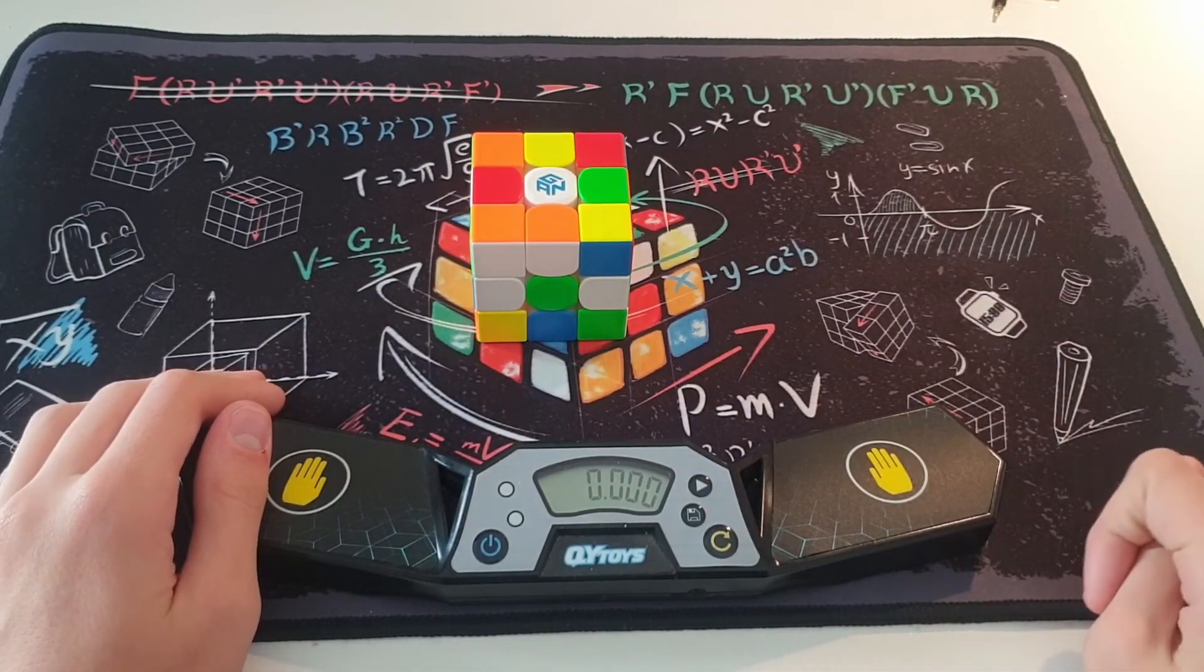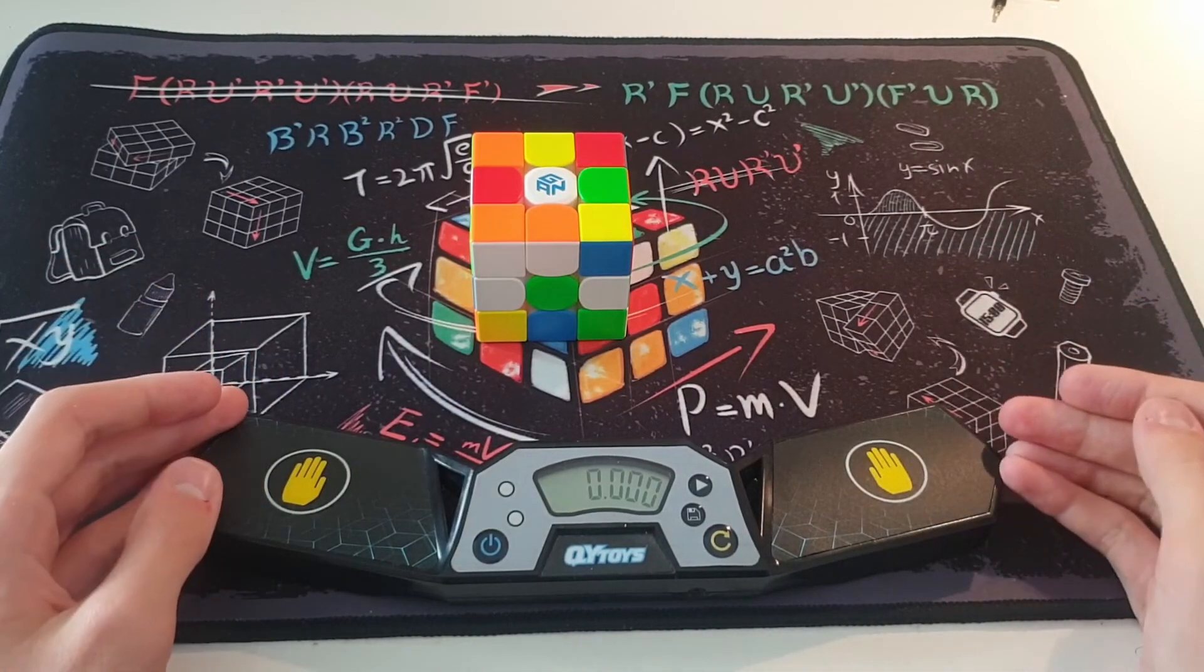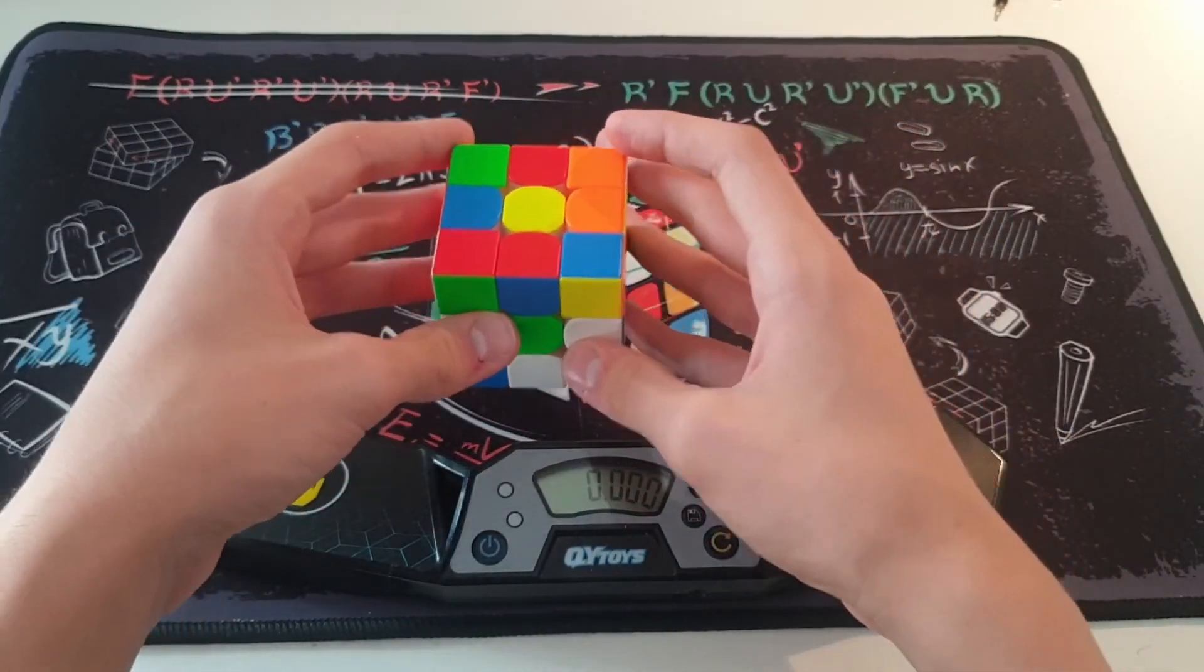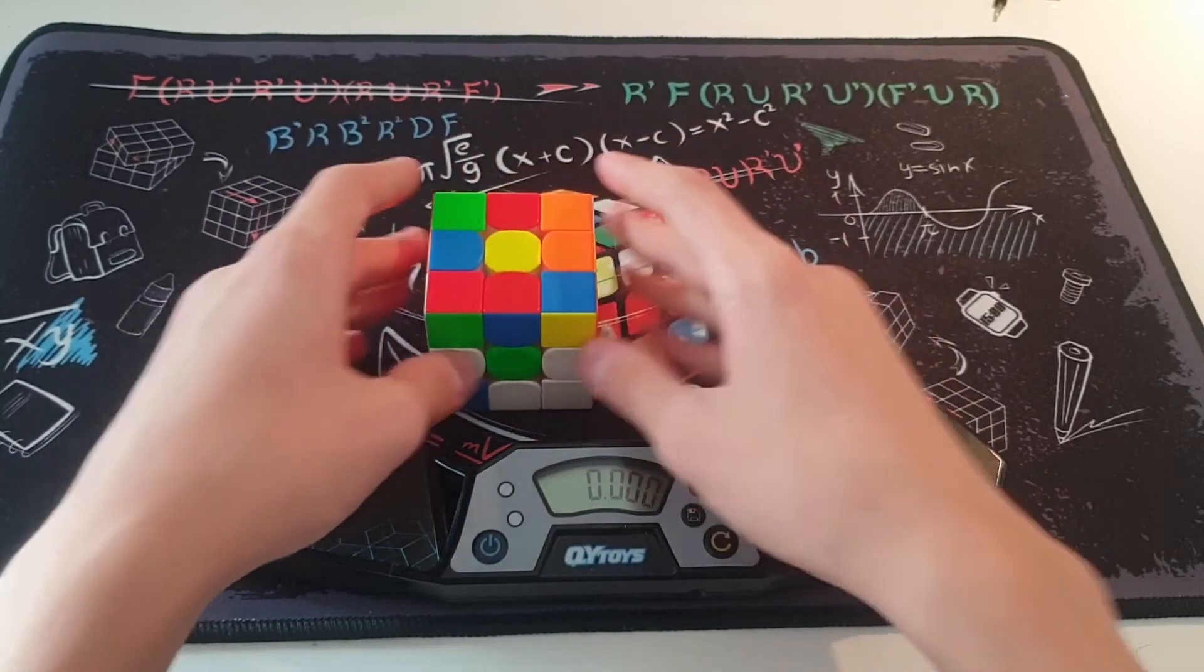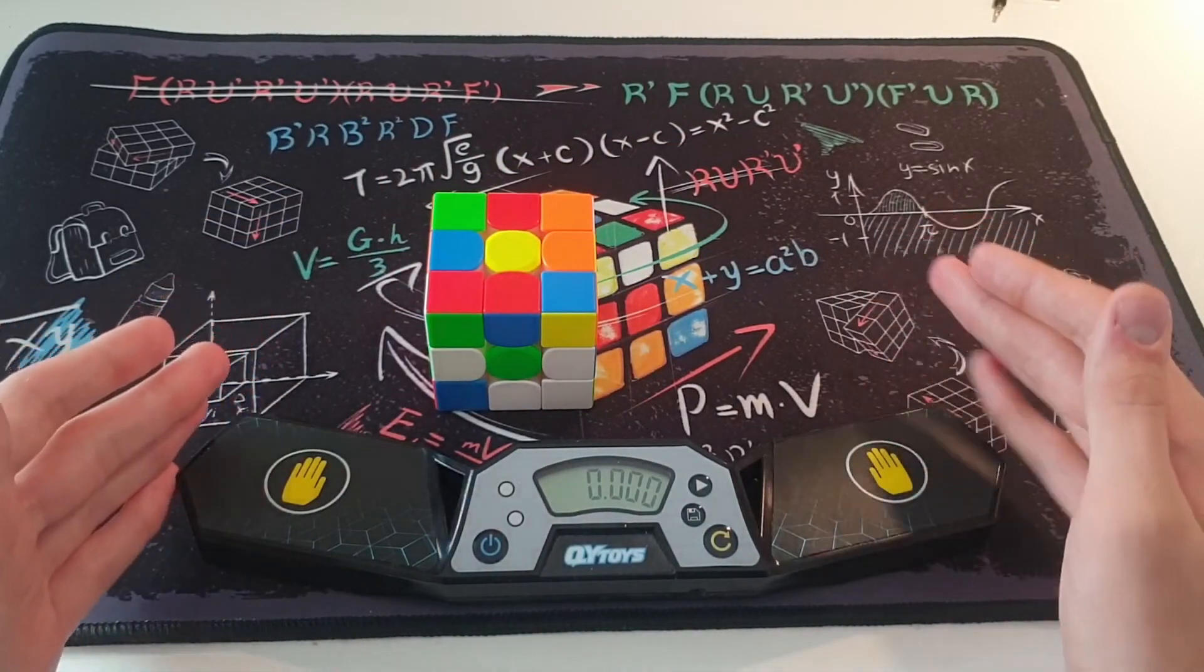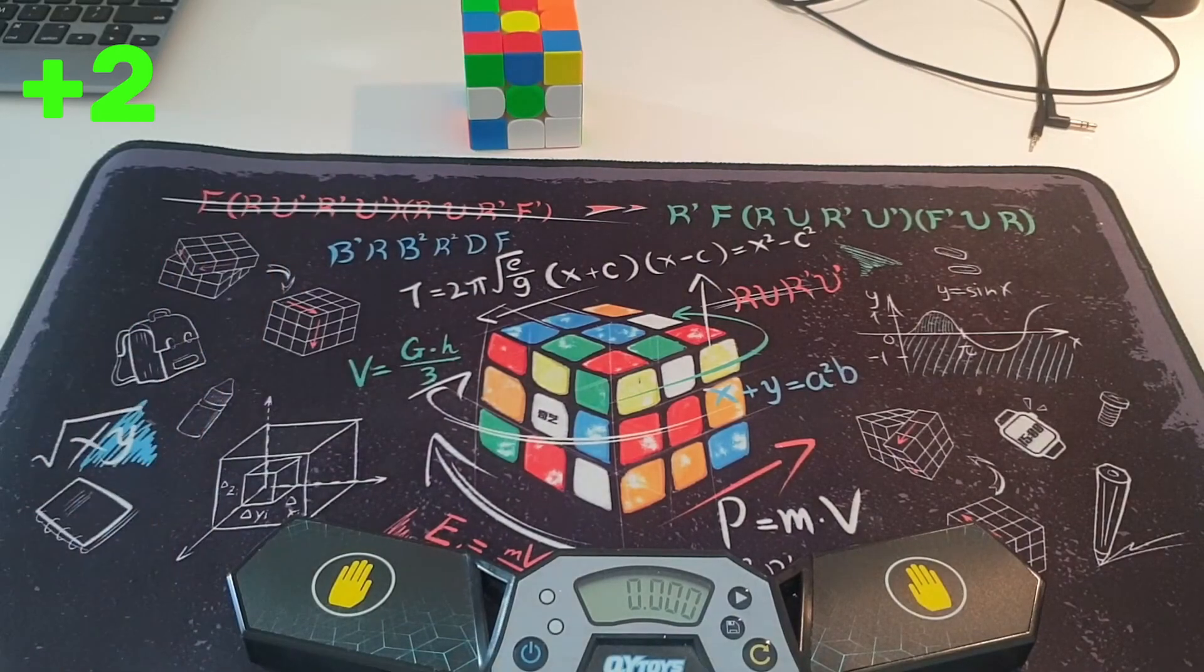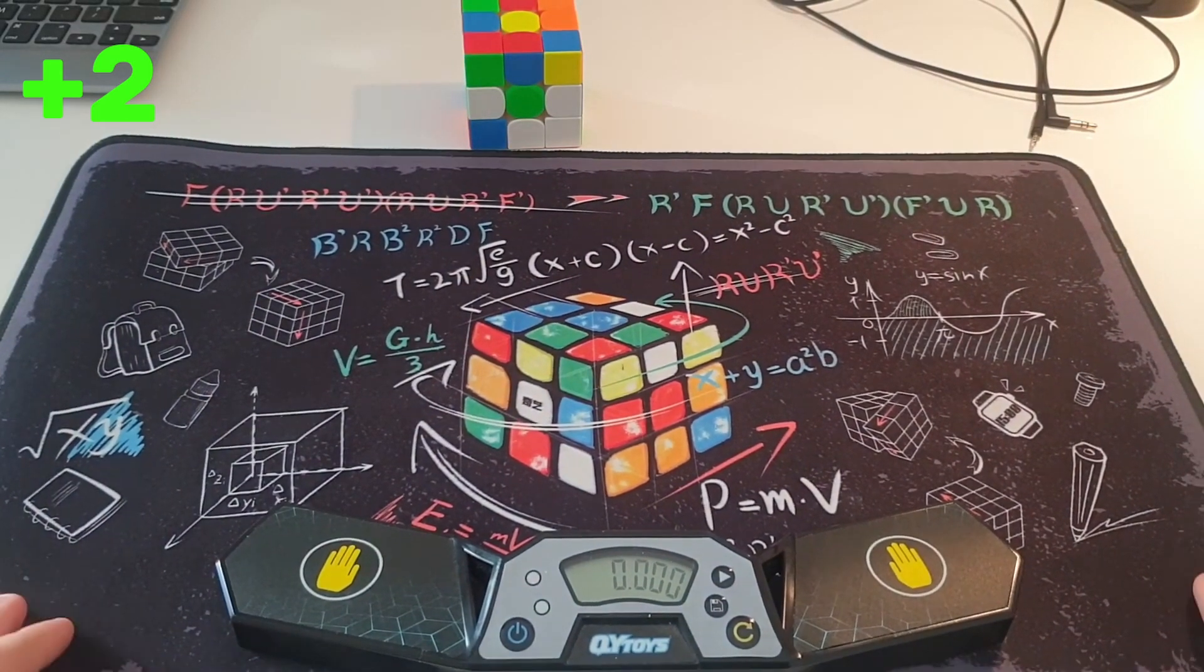So the first step is to go over your 15 seconds of inspection. What that means is when you start, before you start solving the cube, you get 15 seconds to plan your first few moves. And if you go over that, you get a plus 2. The second penalty is placing your cube outside of your mat before you start the solve.